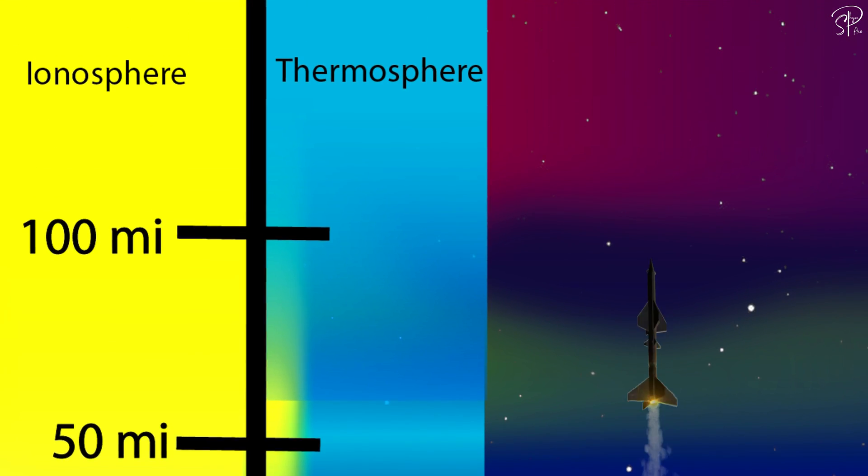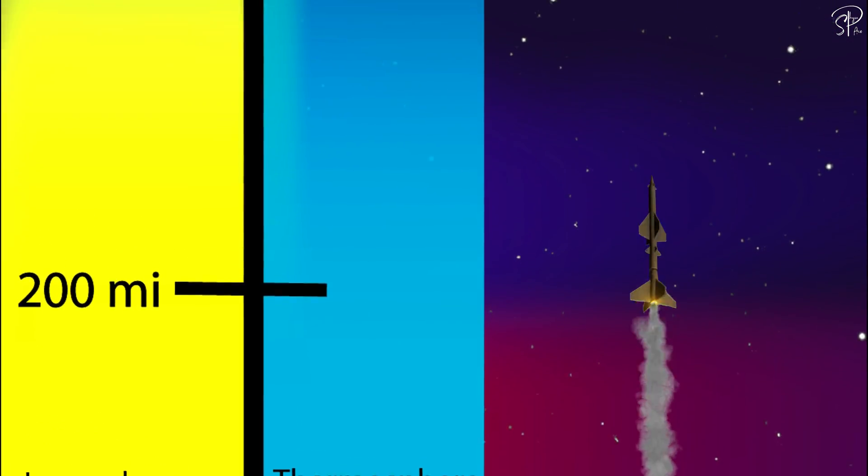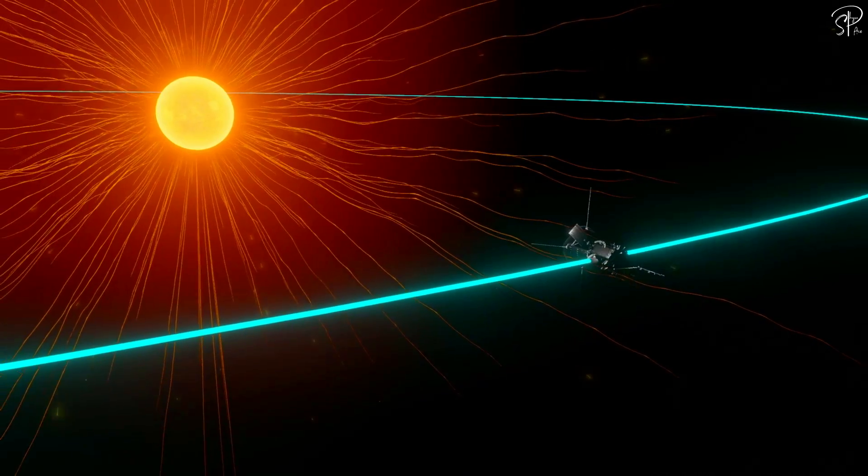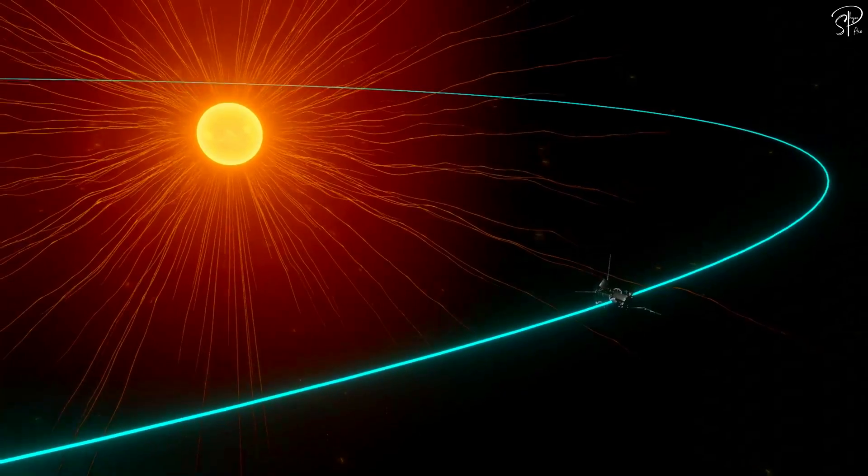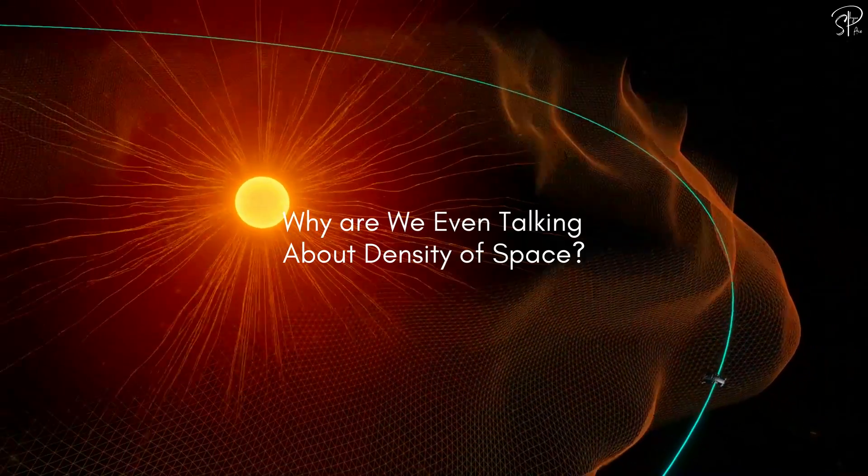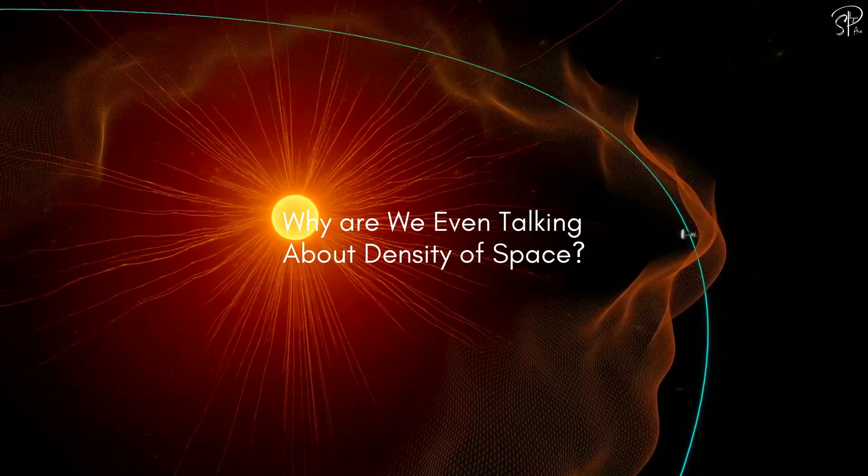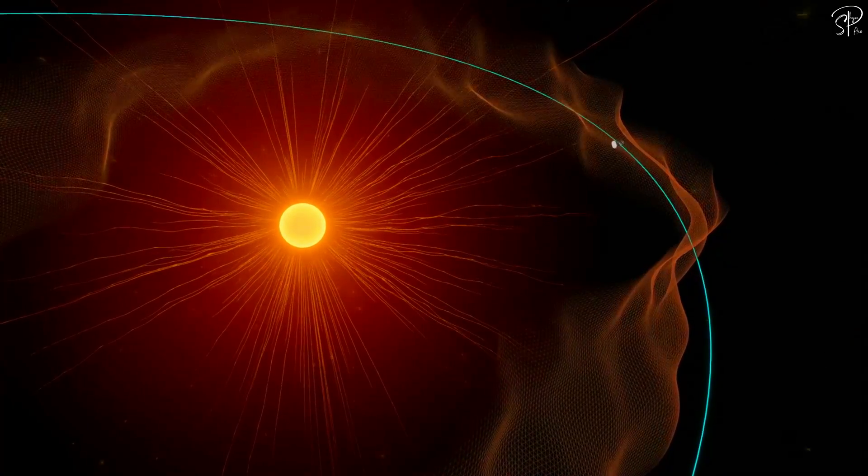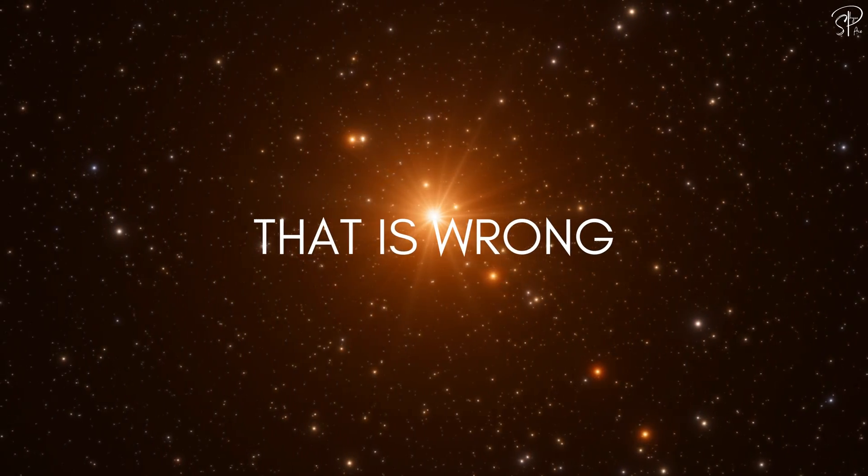On Earth, as you move up, the density of the atmosphere decreases. But that does not seem to be the case for our solar system. You may ask, why are we even talking about density of space? Space is vacuum and there is nothing. Actually, that is not correct.